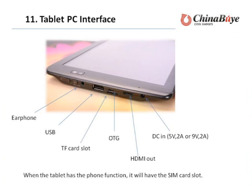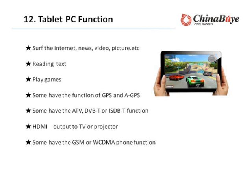Tablet PC interfaces include L4, USB, TF card slot, OTG, and HDMI — which can be used to transmit to a TV or projector. When the tablet has phone functions, it will have a SIM card slot. Tablet functions include surfing the internet, playing games, and some have GPS functions. Additional functions include DVB-T or ISDB-T, HDMI output, and GSM or WCDMA phone functions.